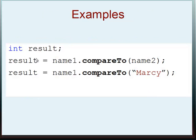Other examples: we have int result and result equals name1.compareTo(name2). And then we also have result equals name1.compareTo("Marcy"). Name2 here is a variable, but Marcy here is a string literal. Both are acceptable when using the compareTo class in Java.